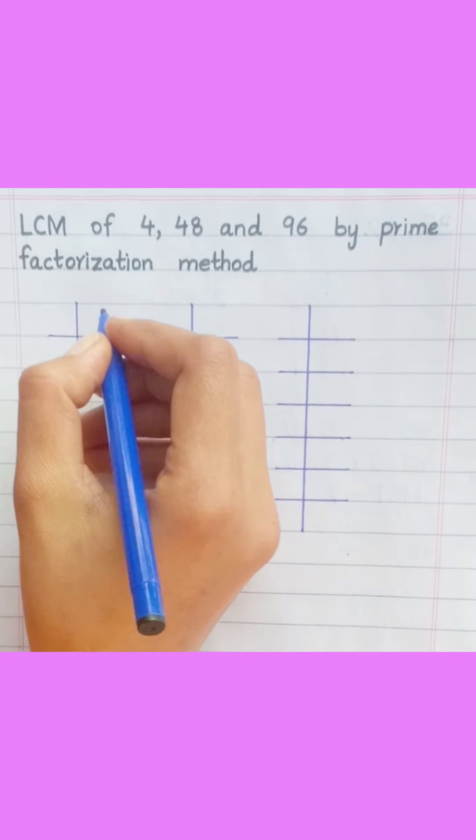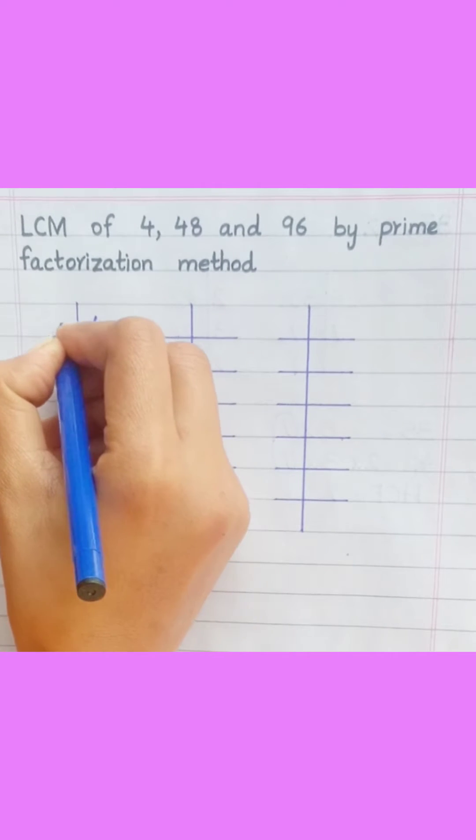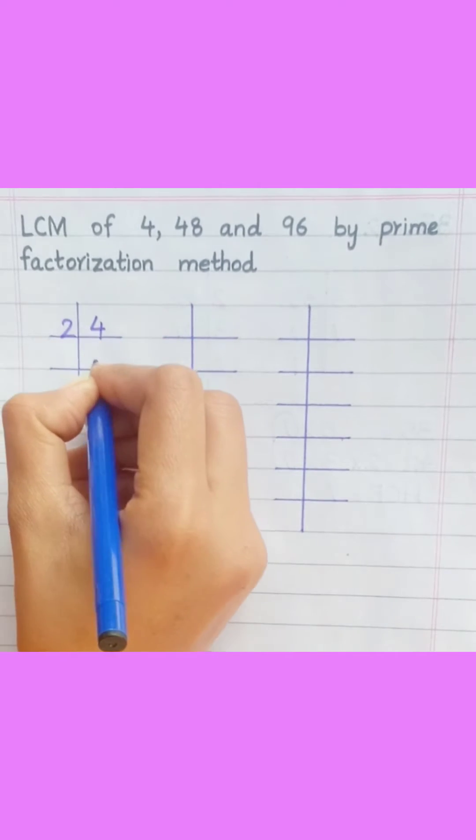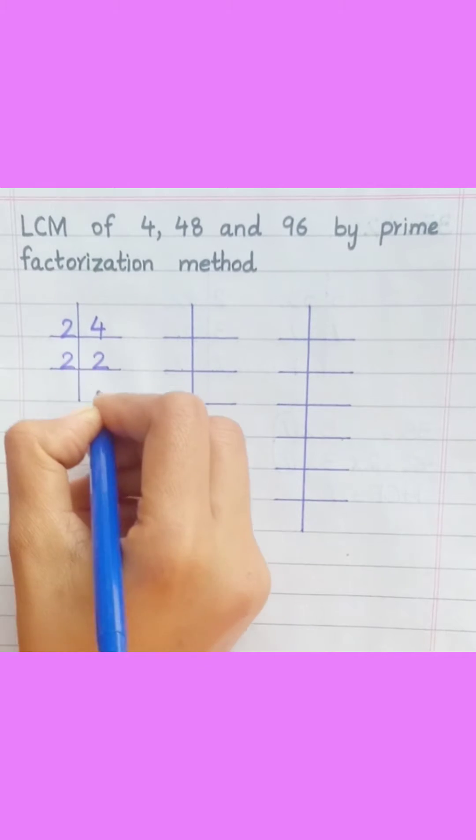Prime factorization of 4: 2 twos are 4, 2 ones are 2.